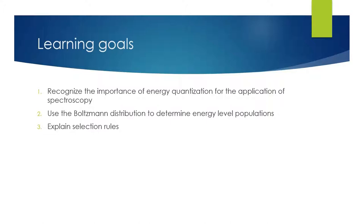We'll use the Boltzmann distribution again — we've seen this a little bit before, but we'll use it much more often now. The Boltzmann distribution is important because it tells us the amount of molecules in each energy level, which will be important for spectroscopy. We'll also look into selection rules, which are rules that govern which transitions are actually observable, specifically for our harmonic oscillators.